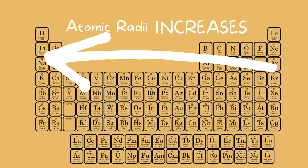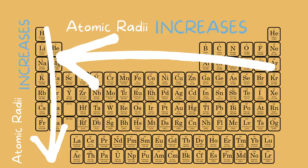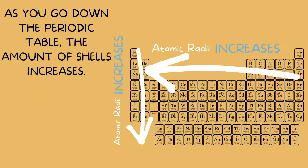The trend of atomic radii on the periodic table looks like this. From right to left, it increases — in other words, the atoms get bigger going right to left. And going downwards on the periodic table, the atomic radii also increases. The reason why it increases going downwards is that as you go down, the number of shells increases on the atom.